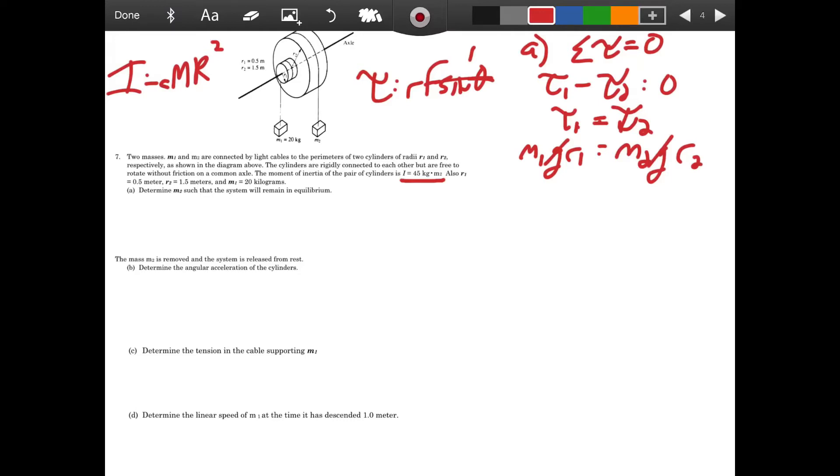Now I can just plug in. So I'm given M1 is 20 kilograms. R1 is also given to me, sorry I had that backwards, R2 is 1.5 meters based on this information here, and R1 is 0.5 meters. So multiply that out, 20 times 0.5 divided by 1.5, and we should get that M2 is equal to 6.67 kilograms.